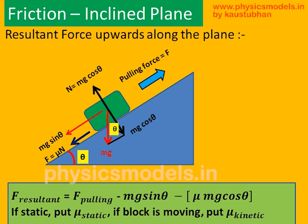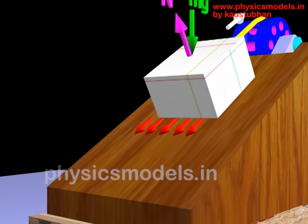Since the block is moving upwards, the pulling force acts upward shown by the blue arrow, while mg sin theta and F = μN both act downward along the plane. The resultant force equals the upward pulling force minus mg sin theta minus μ times mg cos theta. If the block has not yet started to move, use mu static; if it is already moving, substitute mu kinetic. That's all there is to friction on an inclined plane — there is no need to memorize these equations.